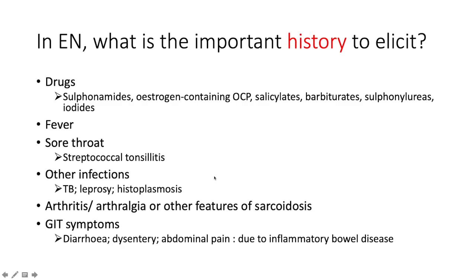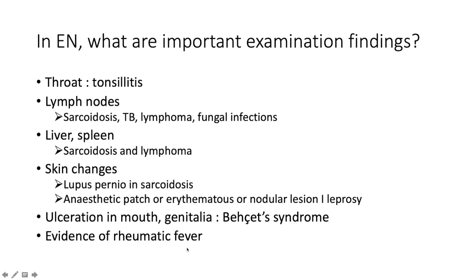Does the patient have arthritis, arthralgia, or other features of sarcoidosis? Those include skin involvement, arthritis, reticuloendothelial involvement with hepatosplenomegaly, ophthalmological involvement with uveitis, distal phalangeal bony cysts, neurological involvement with multiple cranial nerve palsies, and aseptic meningitis. Are there GIT symptoms like diarrhea, dysentery, or abdominal pain, which can be due to inflammatory bowel disease?